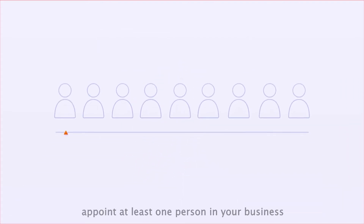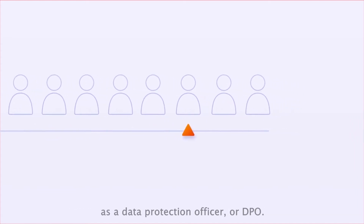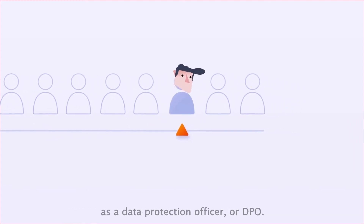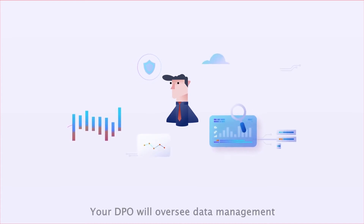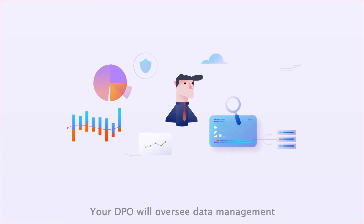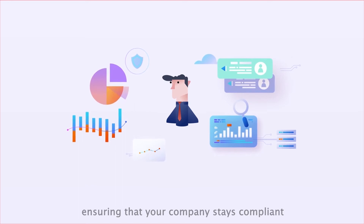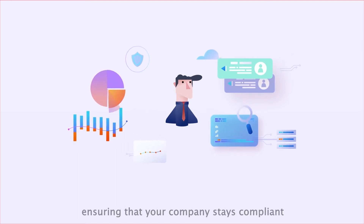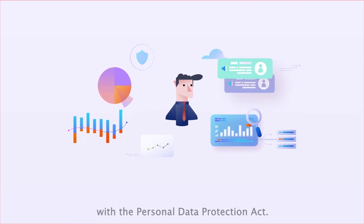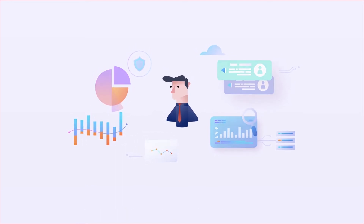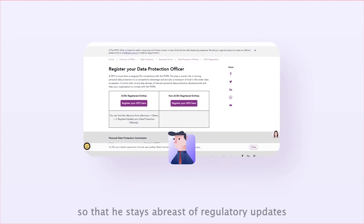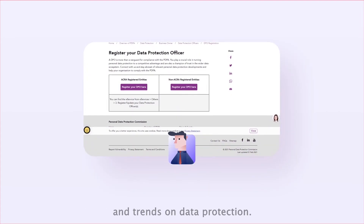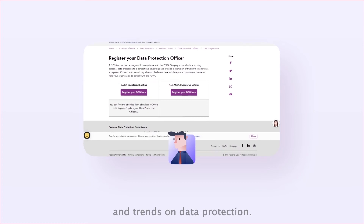First, appoint at least one person in your business as a data protection officer, or DPO. Your DPO will oversee data management, ensuring that your company stays compliant with the Personal Data Protection Act. Don't forget to register him so that he stays abreast of regulatory updates and trends on data protection.